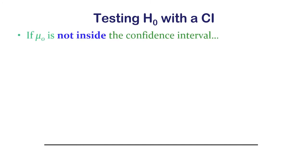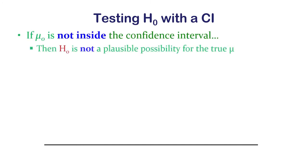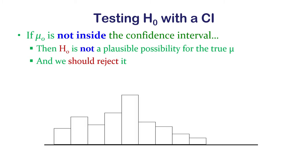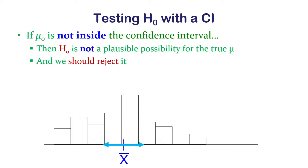However, if mu sub zero is not inside the confidence interval, then the null hypothesis is not a plausible possibility for the true mean, and we should reject the null hypothesis. We calculate our confidence interval and, if the null hypothesis mean is outside it, that's not a plausible value — this sample did not come from a population with that mean.